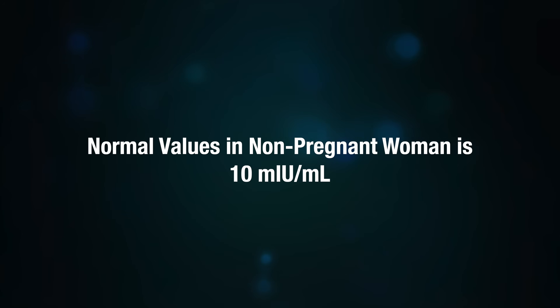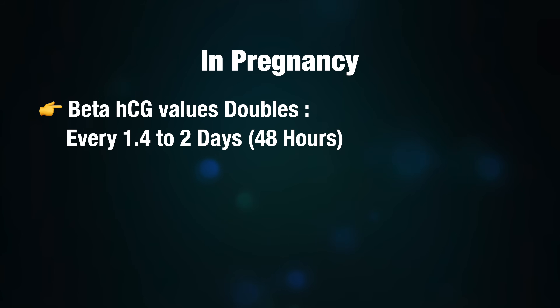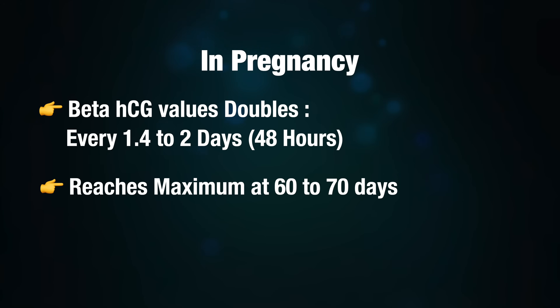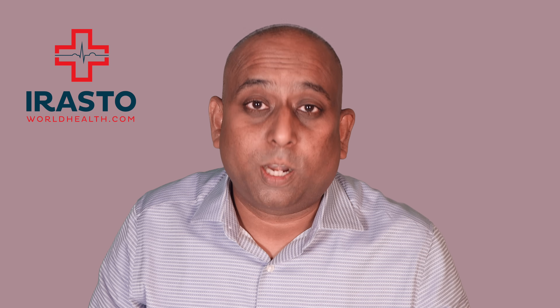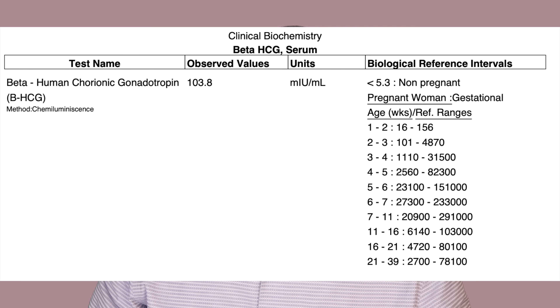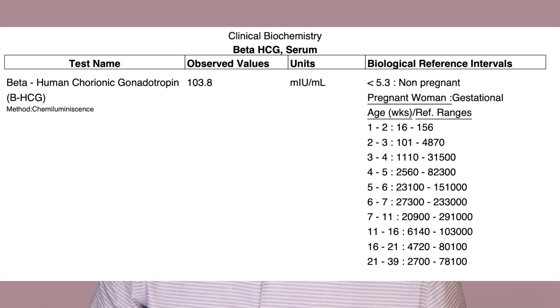Normal beta HCG values in a non-pregnant woman are less than 10 milli-international units per milliliter. In a pregnant woman, beta HCG values double every 1.4 to 2 days — that is, every 48 hours — reaching a maximum level between 60 to 70 days of pregnancy; the concentration then slowly declines in later months. You get the blood report of beta HCG with reference values listed.